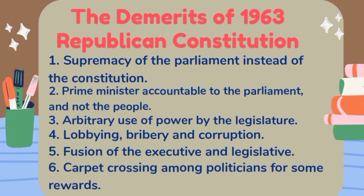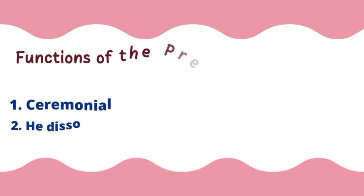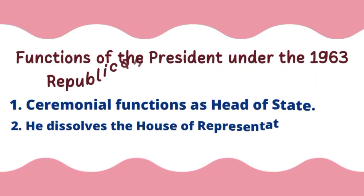Some of the demerits include: there was supremacy of parliament instead of the constitution; the prime minister was accountable to the parliament and not the people; there was bribery and corruption; there was a fusion of the executive and the legislative; and there was too much cross-carpeting from one political party to another in order to get cheap rewards.